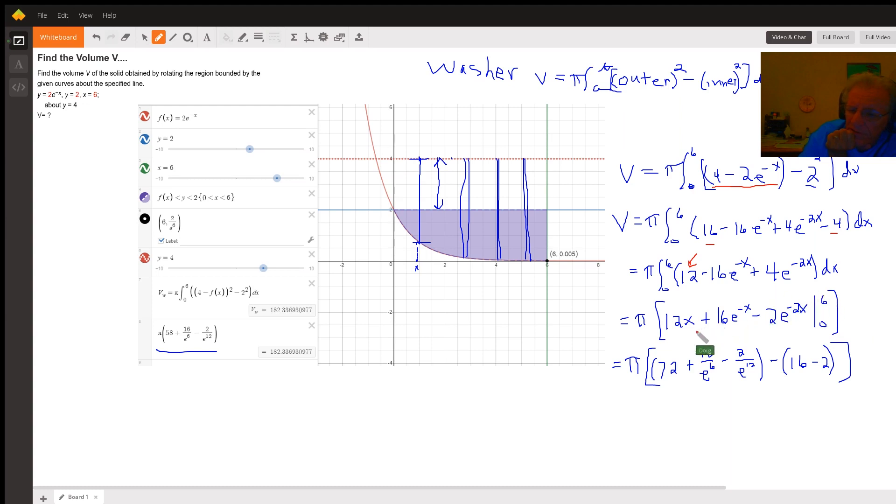So I'll put 6 in, the anti-derivative, and I wrote these with positive exponents on e, and minus, put 0 in for x. 12x becomes 0, the 16 and the minus 2 become a 14, so I have to subtract 14 from this 72.